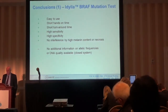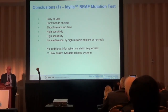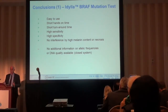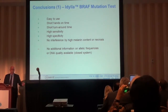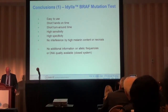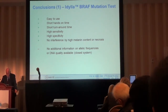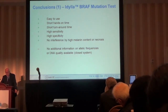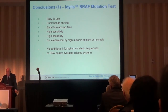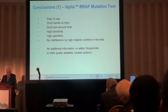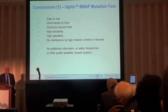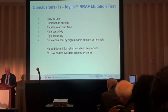Conclusion one: it's really easy to use — my technicians were delighted. You can really take a non-specialist to run it in your lab. Short hands-on time, short turnaround time — it works nicely within two hours. High sensitivity, high specificity, no interference from melanin pigmentation or necrosis — I think this is important. What is the problem? For example, in Germany we have the quality assurance program QUIP — quality in pathology — and there we have to report the allelic frequency, and that is currently not possible with this system, though maybe there can be a change later on.